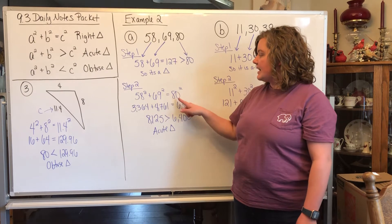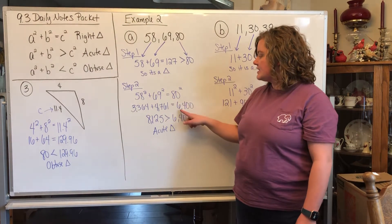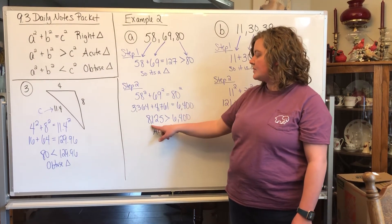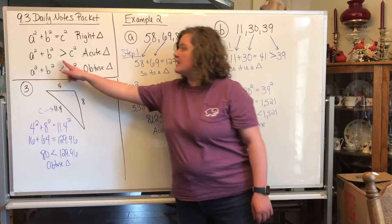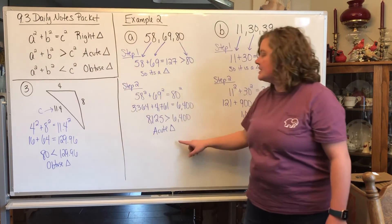You're going to take the biggest side and square it, so 80 squared is 6,400. So since 8,125 is bigger than 6,400, this is bigger than the C squared, it's an acute triangle.